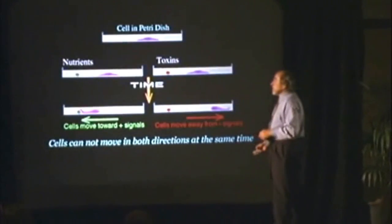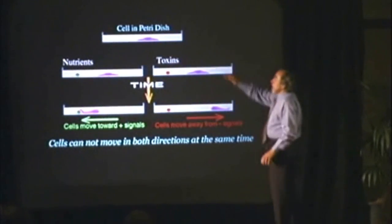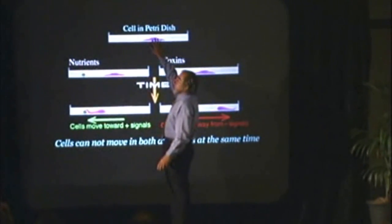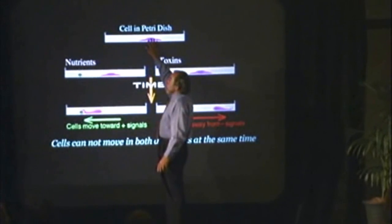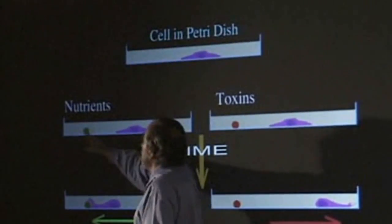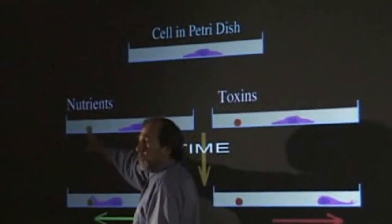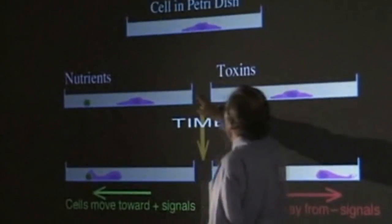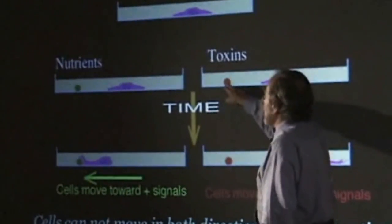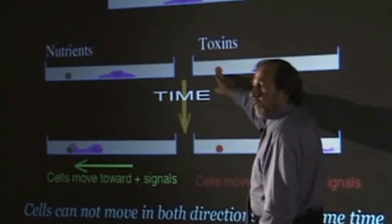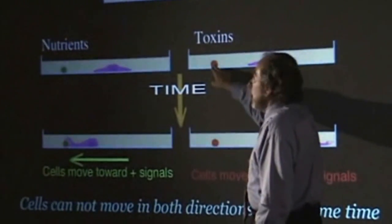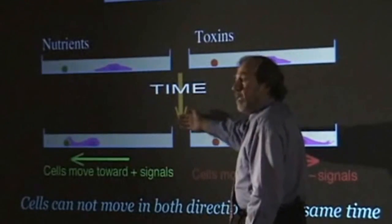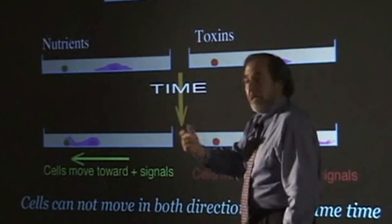I'll give you a simple understanding. I put a cell in a petri dish. In one petri dish, I put nutrients in front of the cell. In another petri dish, I put toxins in front of the cell. And then I wait for a period of time. What's going to happen?